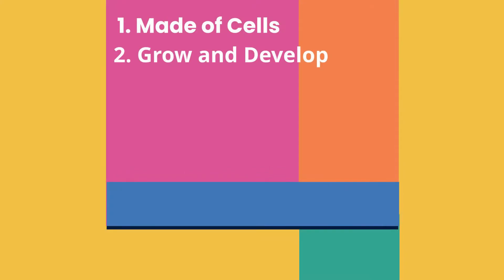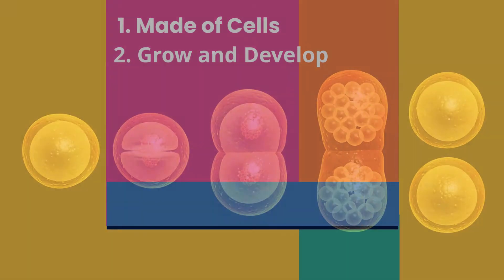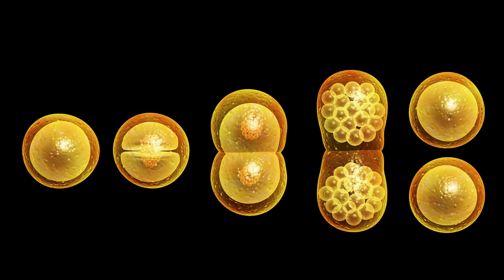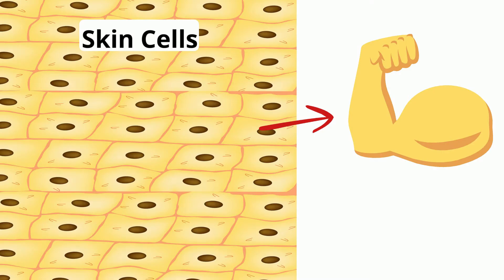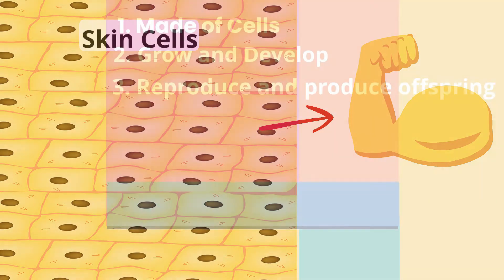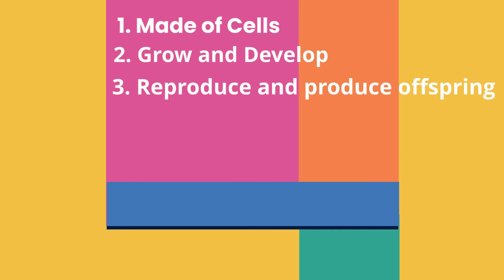Living things grow and develop. Cells grow to a certain size then divide, and an organism gets larger as the number of cells increases. Living things also reproduce and produce offspring.